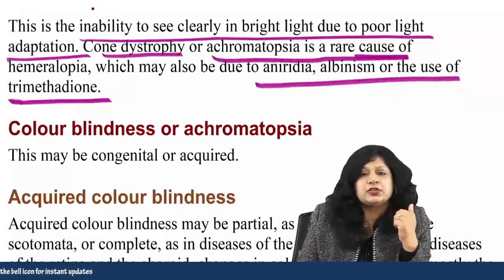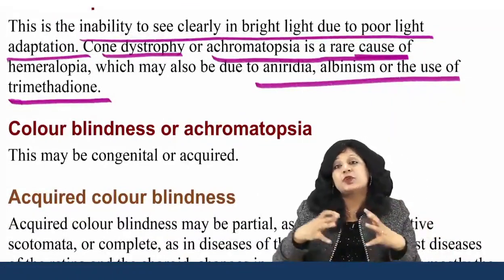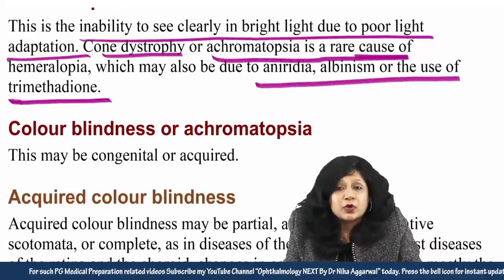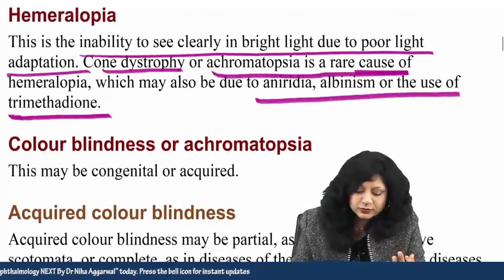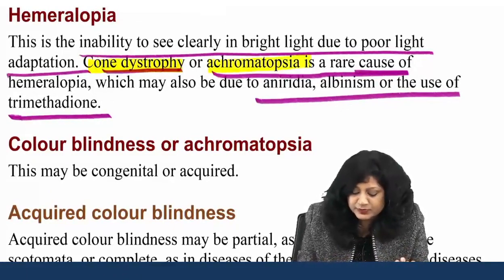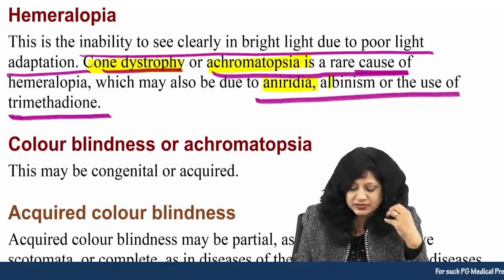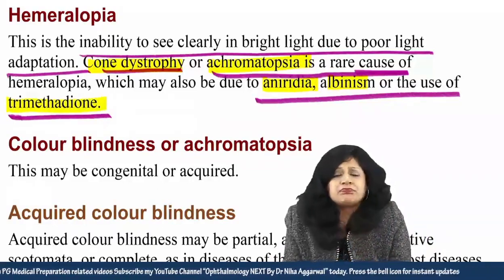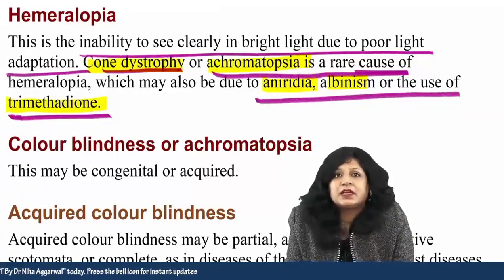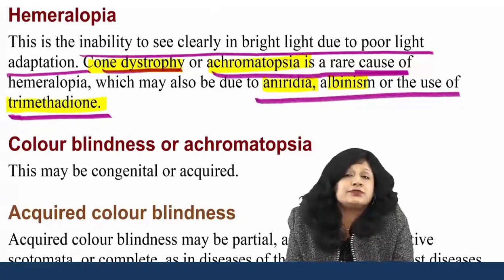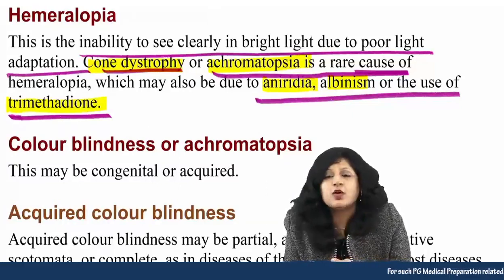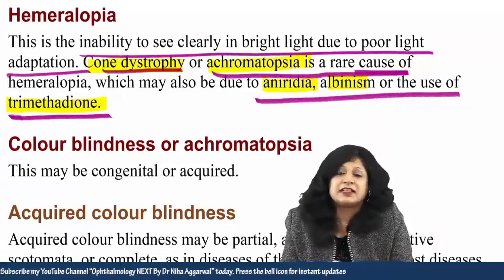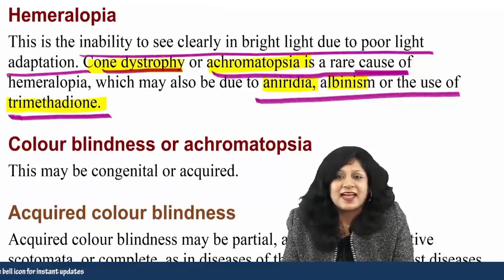Causes of day blindness include cone dystrophy, achromatopsia as a rare cause, aniridia, albinism, or the use of the drug trimethadione. Relative day blindness was also seen in nuclear cataract, posterior subcapsular cataract, and pupilliform type of cortical cataract. In this session today we have seen some of the important symptoms, their symptomatology, what is their pathology, the different causes, and what positive and negative history you should take — along with the differential diagnoses of day blindness and night blindness. In the next section we will be discussing color blindness. Thank you and happy ophthalmology.